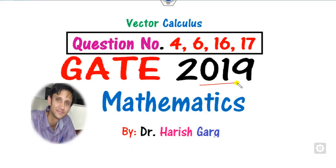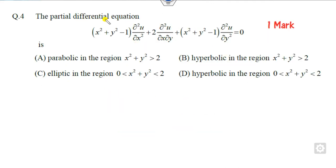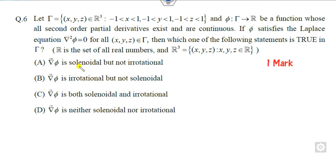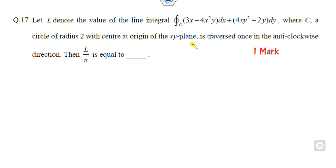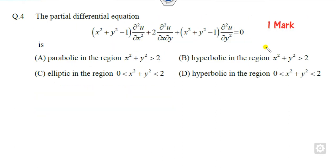Hello everyone, welcome to the next lecture on the GATE 2019 paper. Today we will see how you can solve the questions related to vector calculus. Four questions are asked. The first is related to the partial differential equation and you have to classify it as parabolic, elliptical, or hyperbolic. The next one is related to checking whether a field is solenoidal or irrotational. The third is related to the degree of polynomials, and the last one is related to a line integral. All questions are 1 mark each, so you will get 4 marks in a very simple manner.